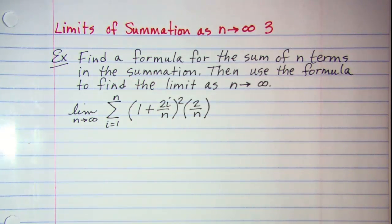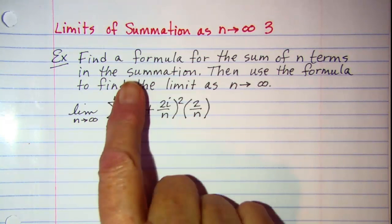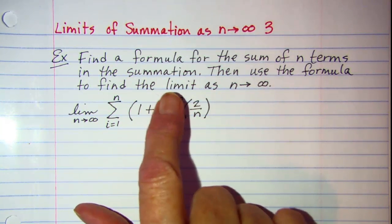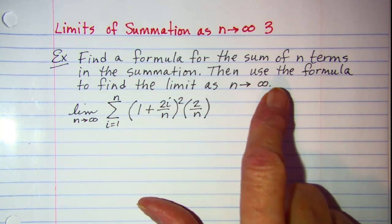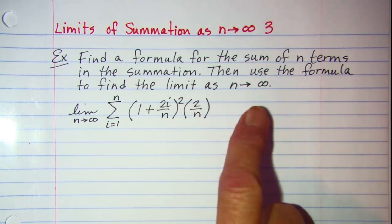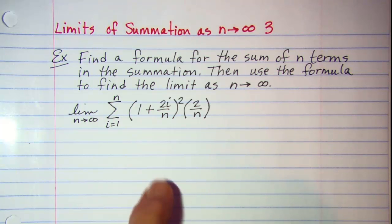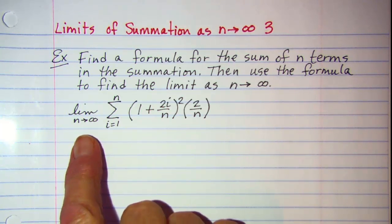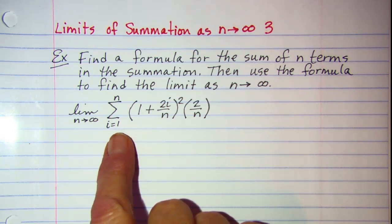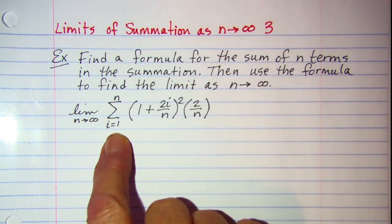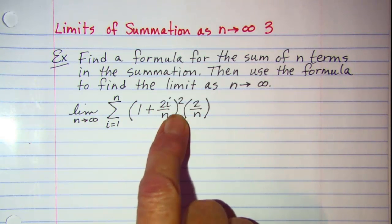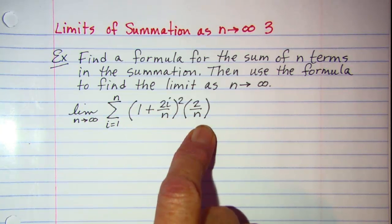The problem that we'll be doing is: find a formula for the sum of n terms in the summation, then use the formula to find the limit as n approaches infinity. The summation we'll be working with is the summation as i goes from 1 to n of the quantity (1 plus 2i over n), that quantity squared, times 2 over n.